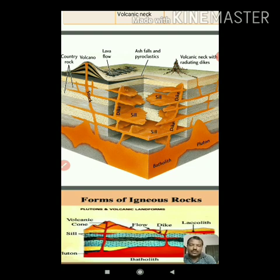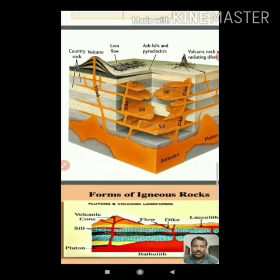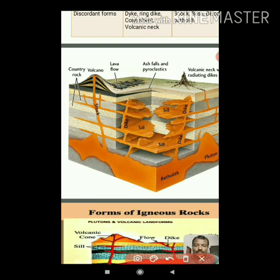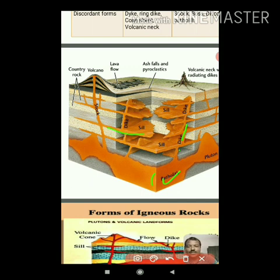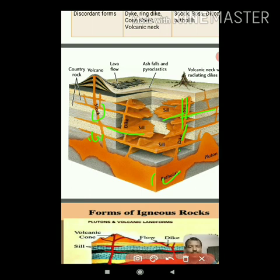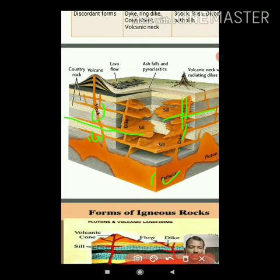Now look at this enlarged figure. This is the batholith, which is a huge intrusion of magmatic material. This is the dike, this is the sill, and this is the stock. Sill is the parallel intrusion; dike is the vertical intrusion that cuts the bedding planes, while sills are parallel to the bedding plane — that's how you can understand concordant and discordant forms.